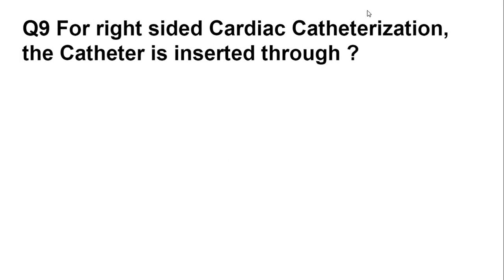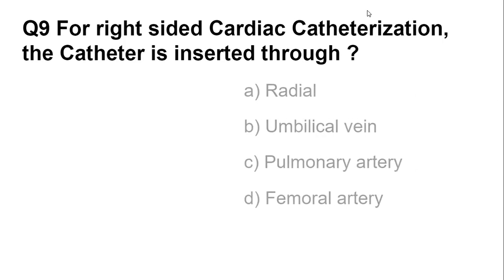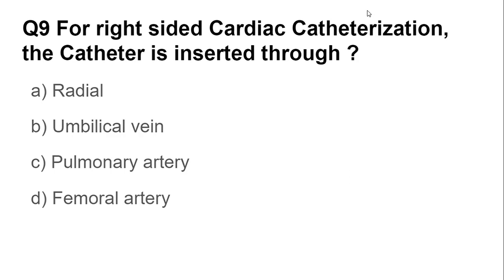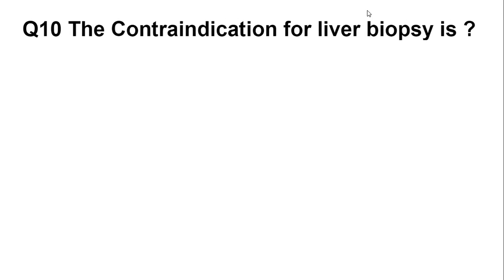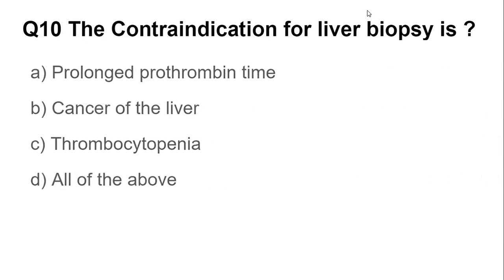Question number nine: for right-side cardiac catheterization, the catheter is inserted through the pulmonary artery — this is an important question. Question number ten: the contraindication for liver biopsy — when do we not perform a liver biopsy?